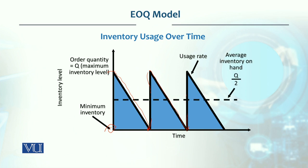The average inventory is Q divided by 2. This is because average inventory is calculated as beginning inventory plus ending inventory divided by 2. In this model, beginning inventory is Q (what we ordered) and ending inventory is zero, so the average is Q divided by 2.